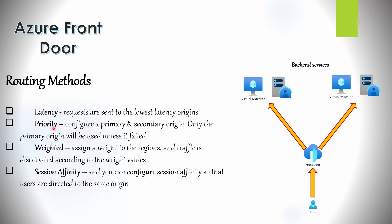With priority routing, you can have a primary and a secondary origin. The higher priority is given to the primary origin, which will always be used, and the secondary origin is used as a backup only — similar to active/standby or active/passive deployments. With weighted routing, you add a weight value to origins and traffic is distributed between origins by those weight values. With session affinity, users are directed to the same origin for their session — similar to cookie persistence.